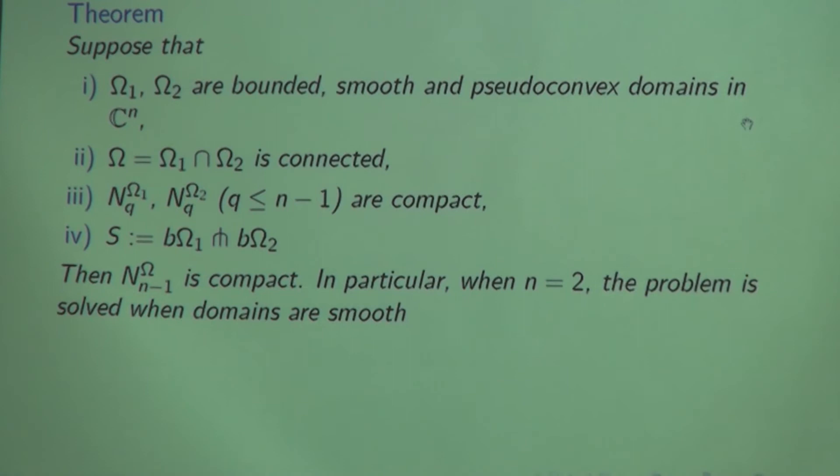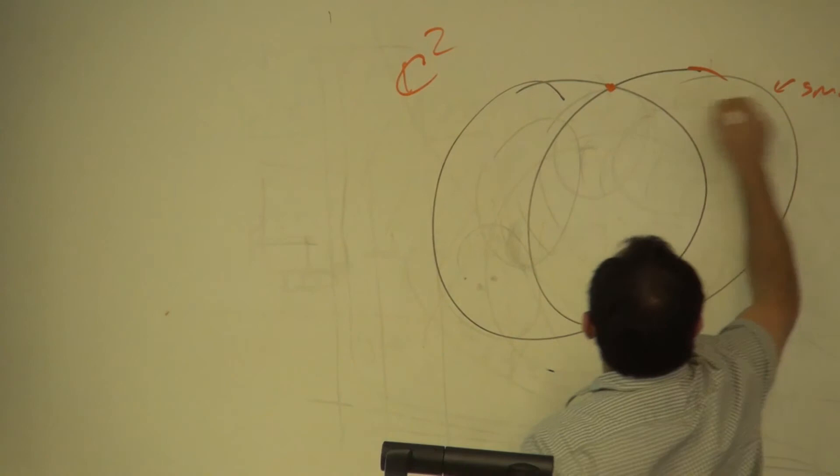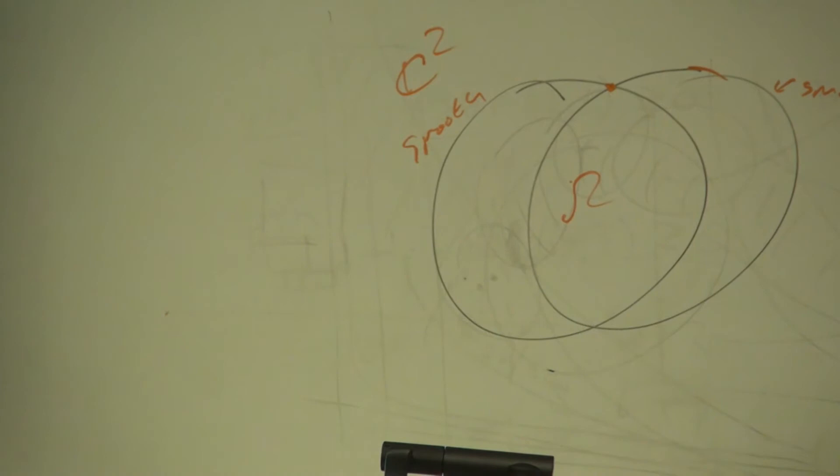In C^2: suppose both domains are smooth, the intersection is transverse with smooth boundary on each side — then omega has a compact D-bar Neumann operator. The question is more or less solved in C^2, but there are things to settle in higher dimensions that I couldn't resolve yet.